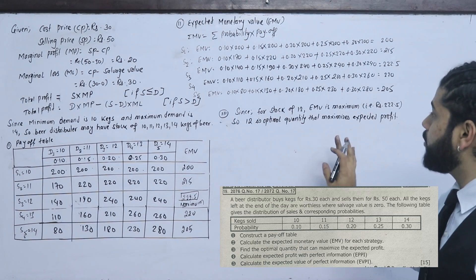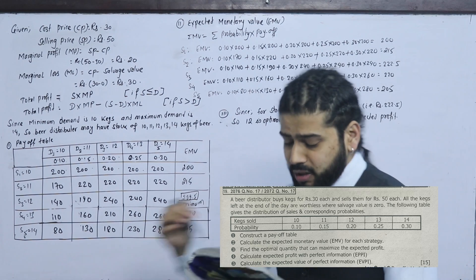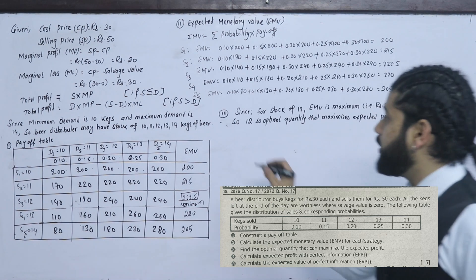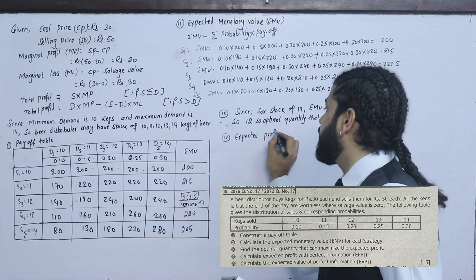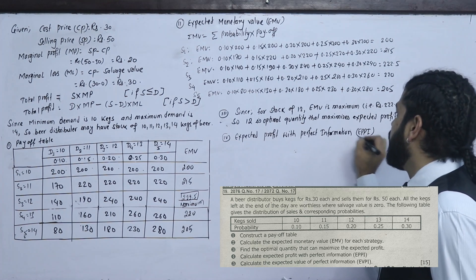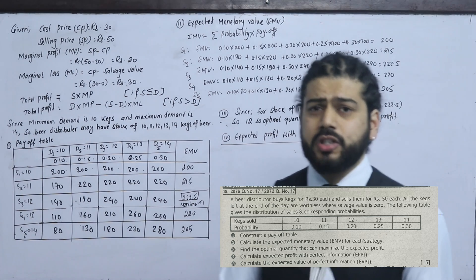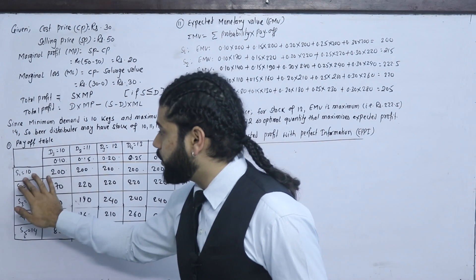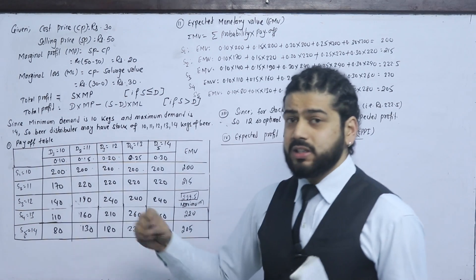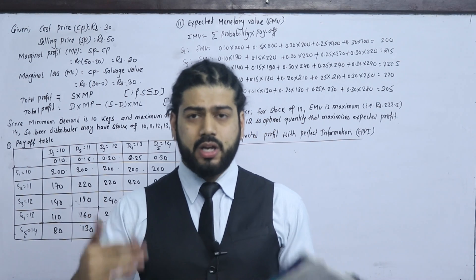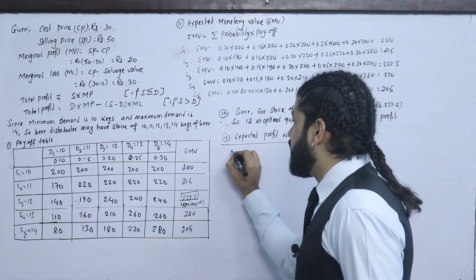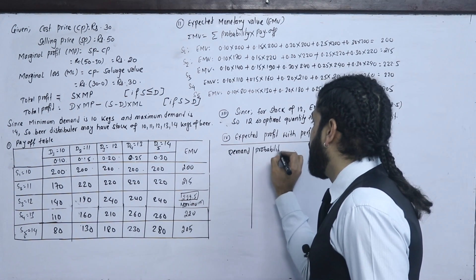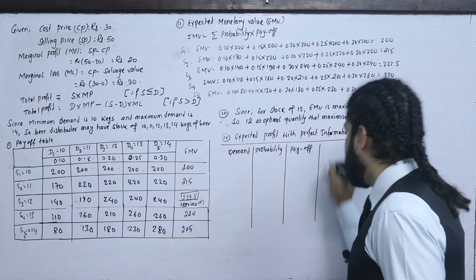The third part: calculate the Expected Profit with Perfect Information (EPPI). With perfect information, if there is a demand, the exact stock is available. We construct a table with columns: Demand, Probability, Pay-off, and Expected Profit.